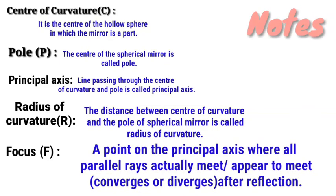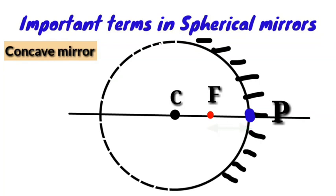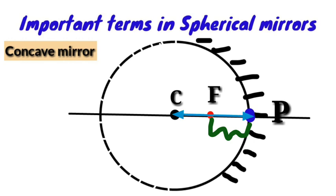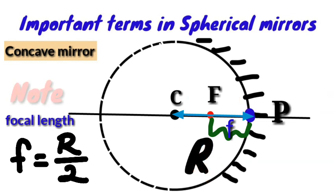The principal focus is denoted as big F. The distance from the pole to the focus is the focal length, denoted as small f. The radius of curvature is the distance from pole to center of curvature. The focal length f is equal to the radius of curvature R divided by 2: f = R/2.